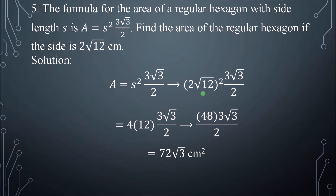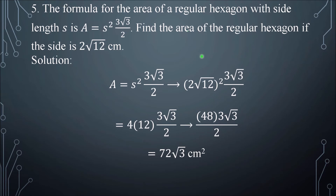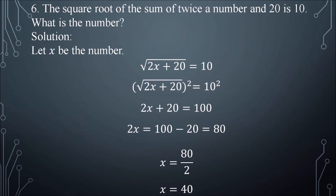Squaring 2√12: 2² is 4 and (√12)² is 12, giving 4 × 12 = 48. So we have 48 × (3√3 / 2). The 48 is multiplied to the numerator: 48 divided by 2 is 24, and 24 times 3 is 72. The final answer is 72√3 cm². It is squared because we are talking about area, which has two dimensions.